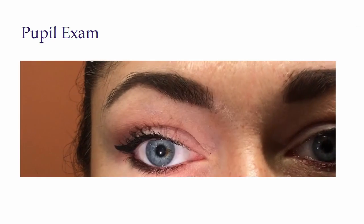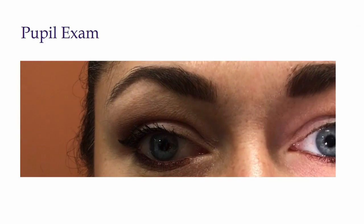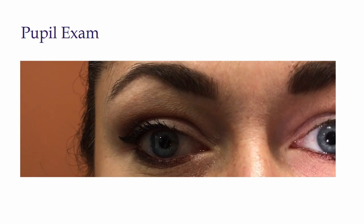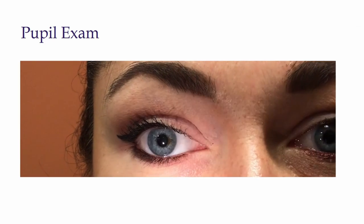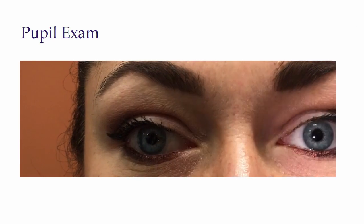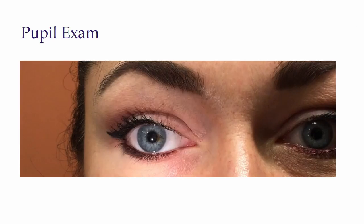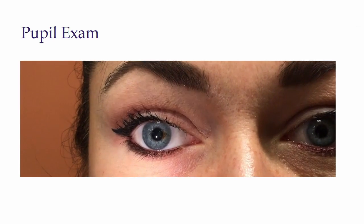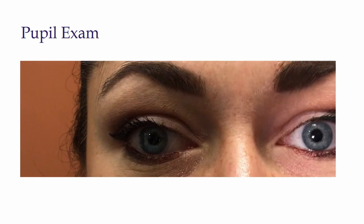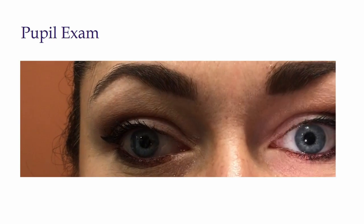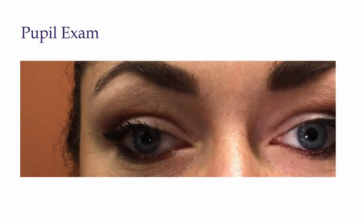In this video, notice how the pupil first constricts and then starts to dilate. This is known as hippus, and it is not pathologic. The important finding is that the pupil constricts first when exposed to light.